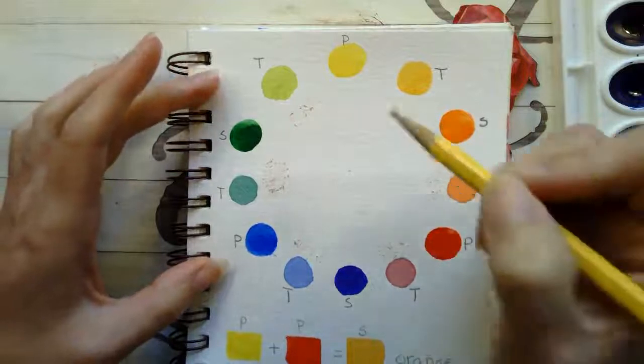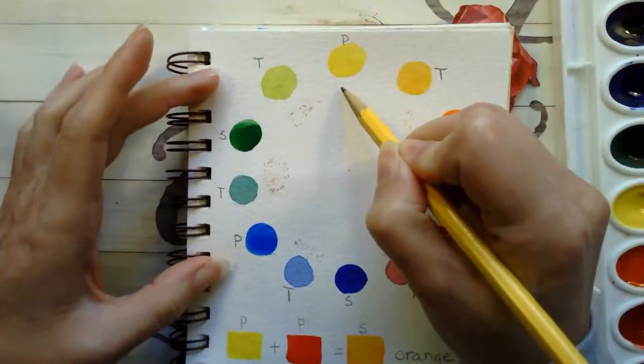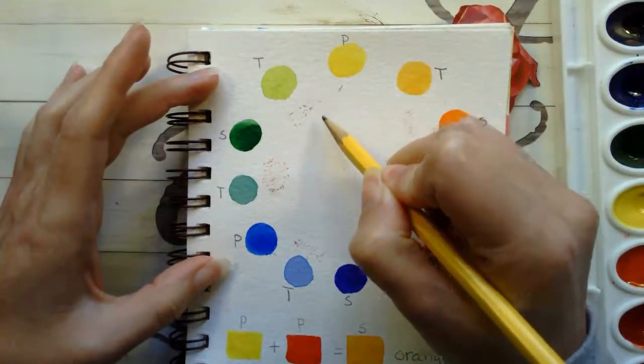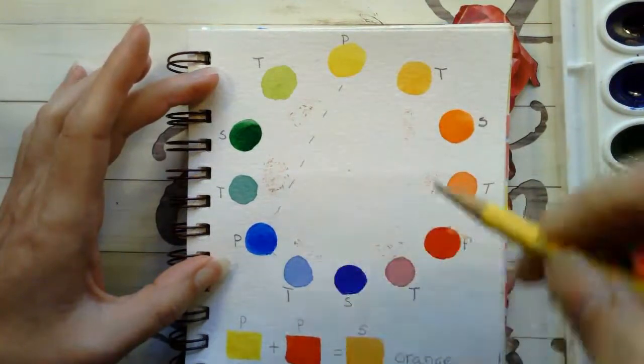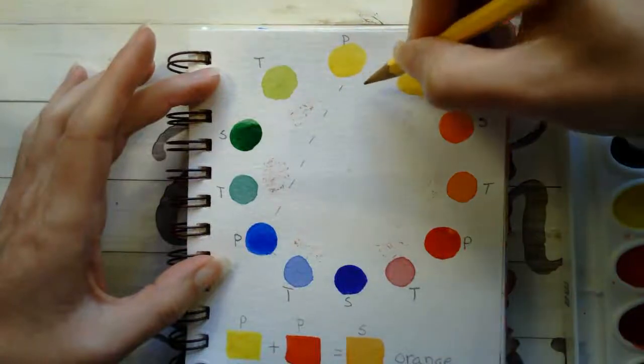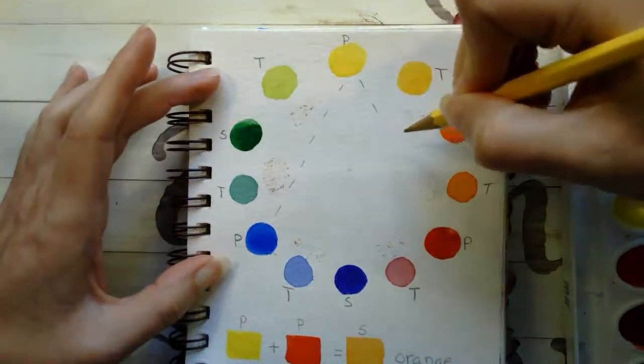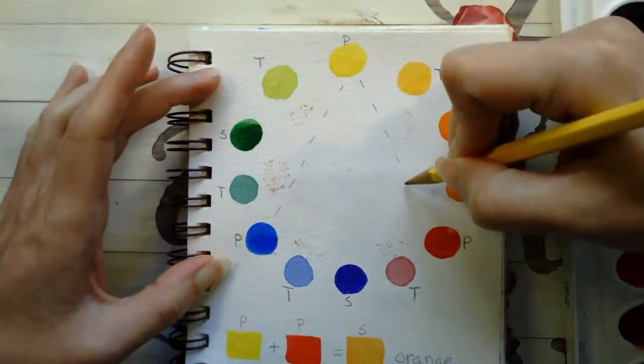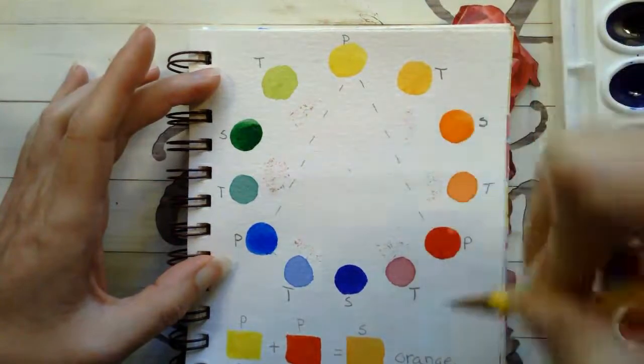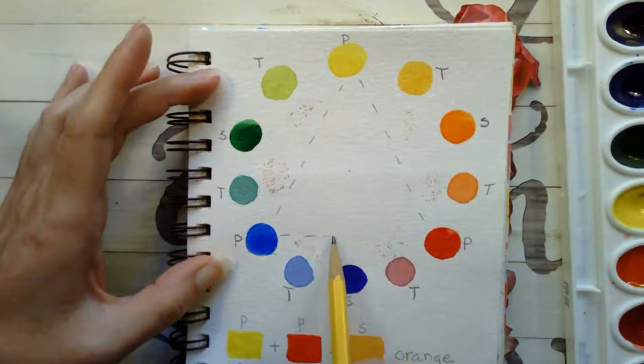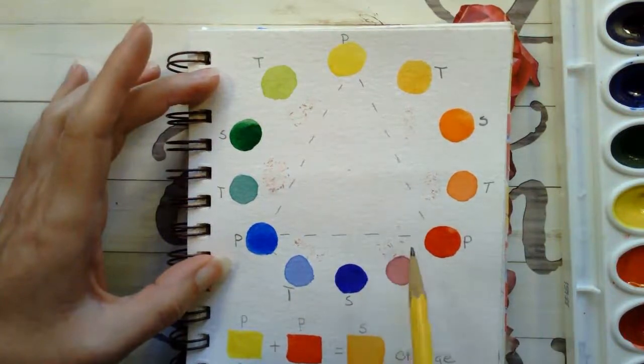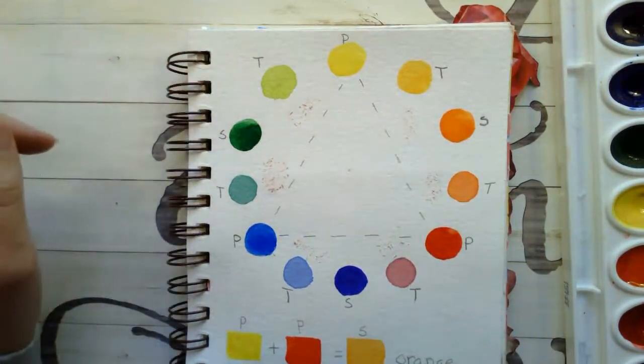And what I'm going to do now is I'm just going to connect my yellow to my blue with a dotted line, my yellow and my red. And all I'm doing right now is just showing that these are my primary colors and they're set up like a triangle on the color wheel.